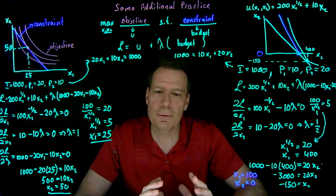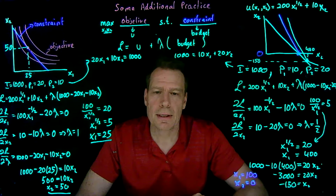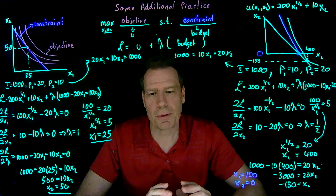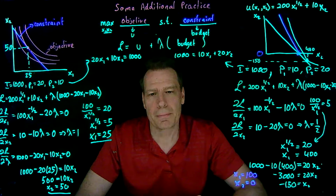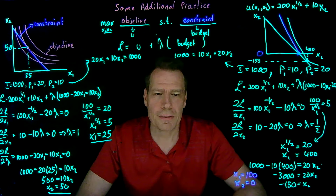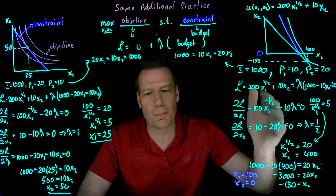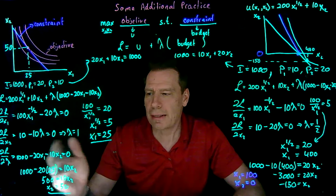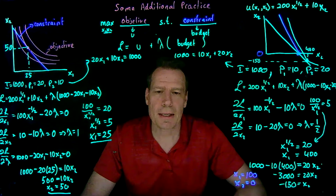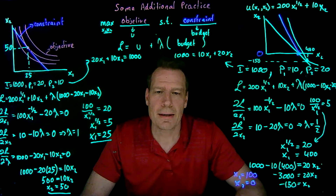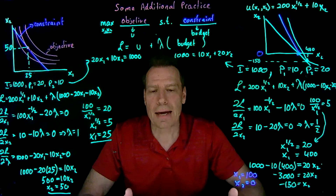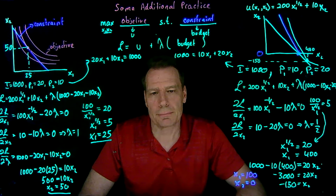The key to all of this is to be sure you know how to set up the problem. If you have the Lagrange function and know the basic steps, you'll either end up with an interior solution or a corner solution, and you can solve for the actual optimal consumption bundle.